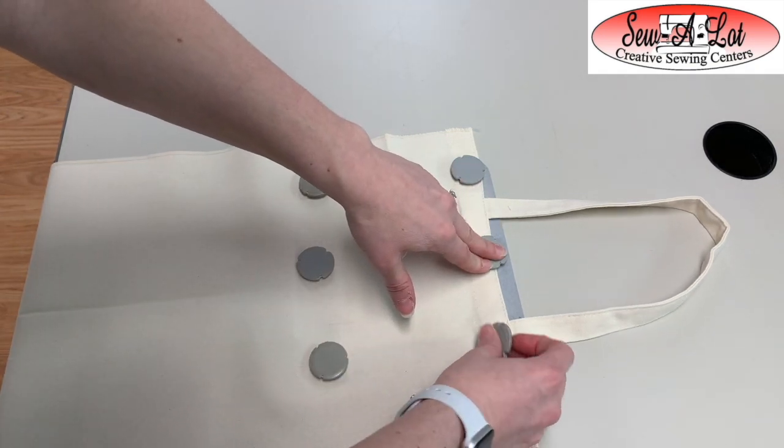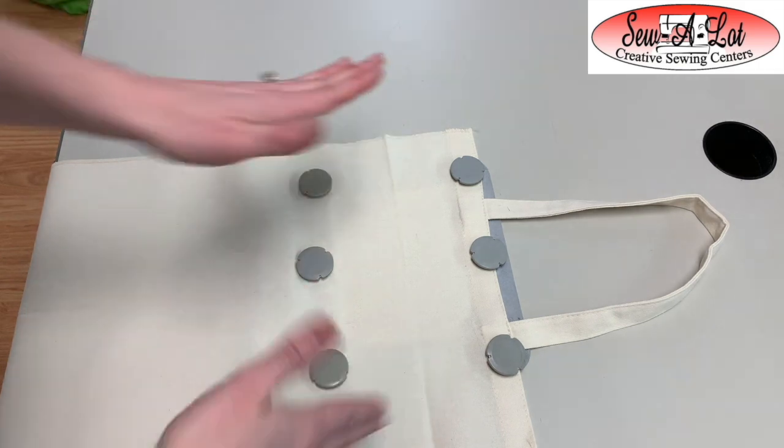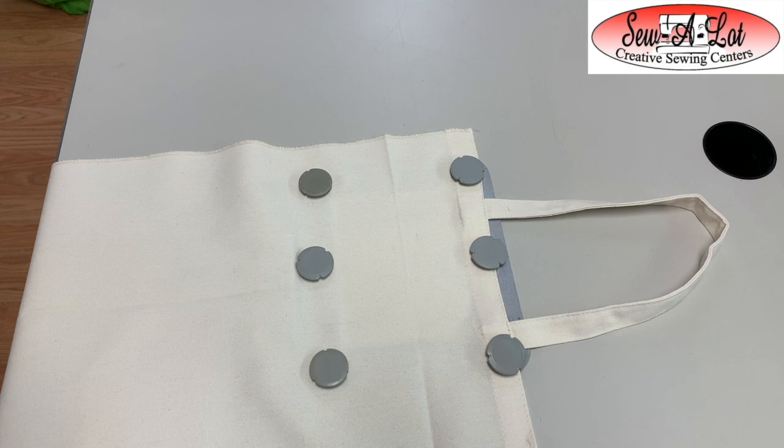You also have the option, maybe if you're not using the magnetic hoop, that you could use your baste function and you could baste around the design to keep this from shifting or moving. Even with the magnetic hoop if you choose to, you can use that baste function. So now we're going to go to the machine and we're going to stitch outside one.